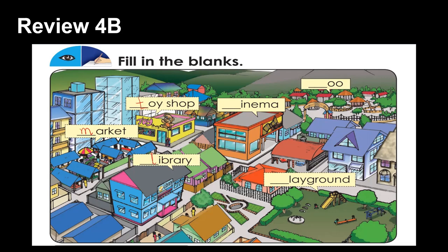Next one — you can go and watch movies here. So what do we call this? Cinema. Cinema starts with C. And you can go and watch animals here — it's a zoo. And then you can go and play in the playground.